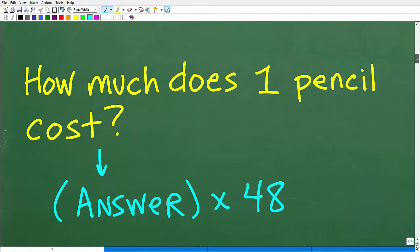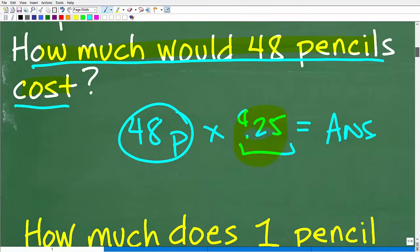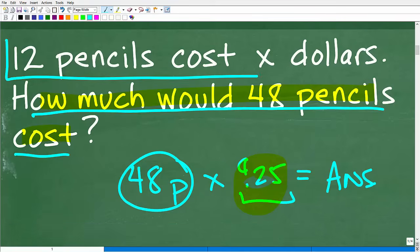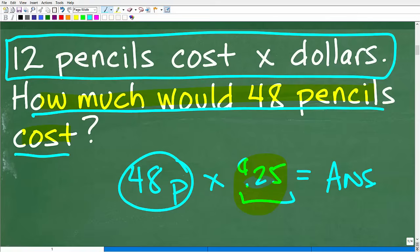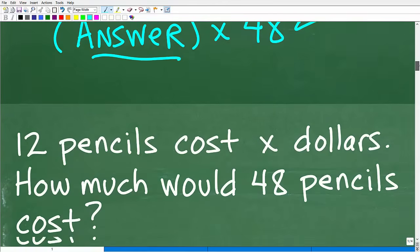So how much would 48 pencils cost? Well, again, if I knew how much one pencil cost, I could figure this out. So probably it's a good idea to want to figure out how much one individual pencil cost. So let's kind of just structure our ideas this way. How much does one pencil cost? Well, that answer, whatever that is, multiply that by 48, then we have solved the problem. So this is the question. So we're going to have to use this part of the problem, this information right here to figure out how much one individual pencil costs. Now, how can we do that? Well, I'm going to show you that right now.